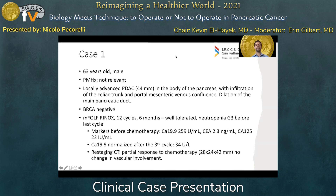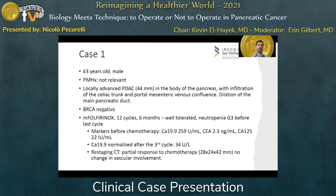The first case involves a 63-year-old man with no relevant past medical history, a locally advanced pancreatic ductal adenocarcinoma in the body of the pancreas, diagnosed because of an infiltration of the celiac trunk and portal mesenteric venous confluence. The patient has dilation of the main pancreatic duct. He is BRCA negative and undergoes 12 cycles of FOLFIRINOX in six months, well tolerated until the last cycle where he had a G3 neutropenia. Tumor markers before chemotherapy showed a CA 19-9 of 259, which normalized to 34 after the third cycle. At restaging CT scan, we have a partial response to chemotherapy — good biological response — but no change in the vascular involvement.